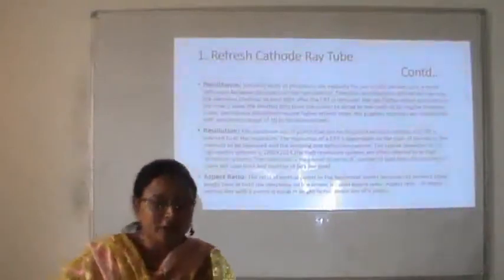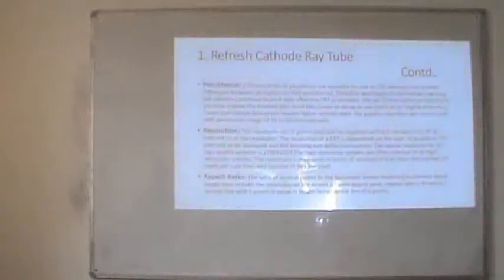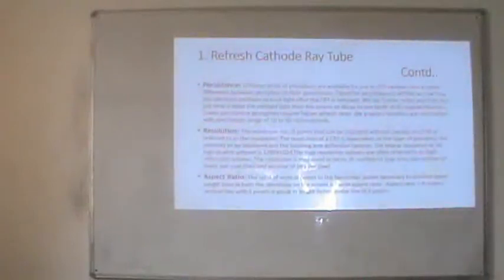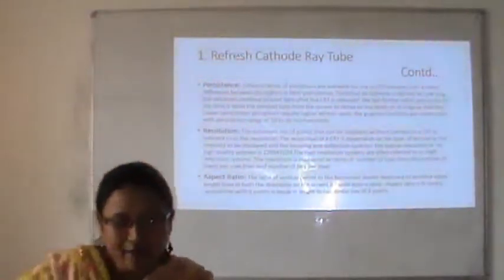Key terms to know: First is persistence. Different types of phosphors are available for use in CRT besides color. Persistence is defined as how long the electrons continue to emit light after the CRT beam is removed — specifically, the time it takes the emitted light to decay to one tenth of its original intensity. Lower persistence phosphors require higher refresh rates. Graphics monitors are constructed with a persistence range of 10 to 60 microseconds.